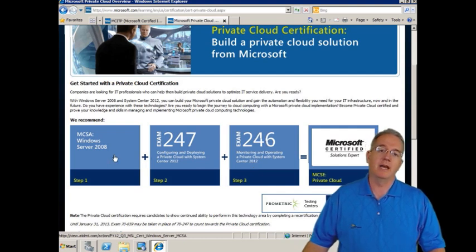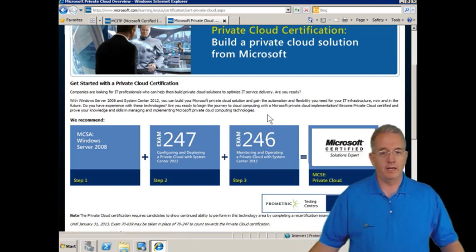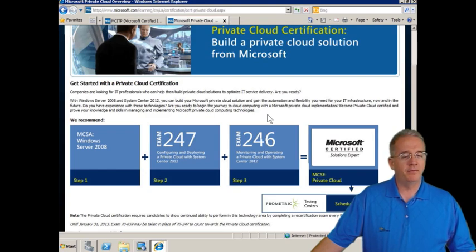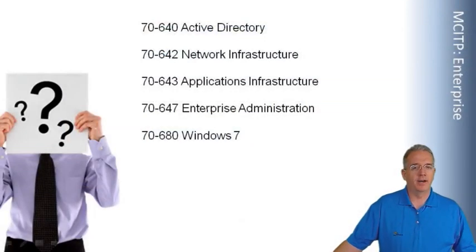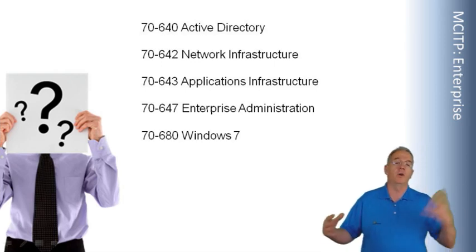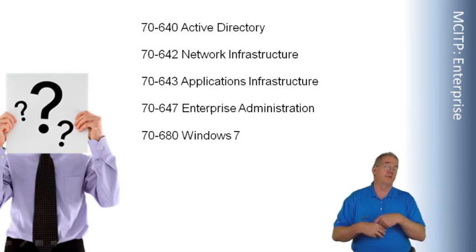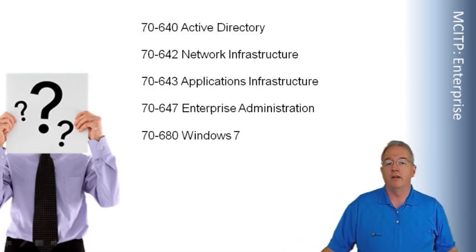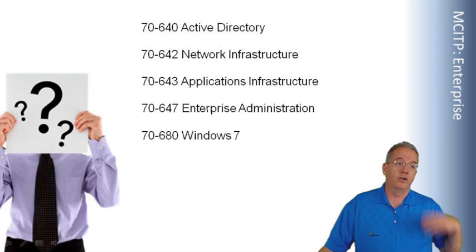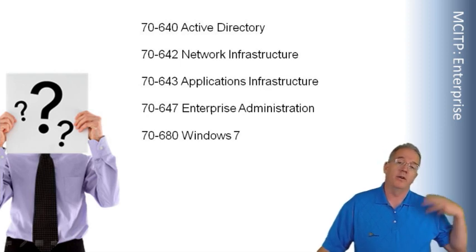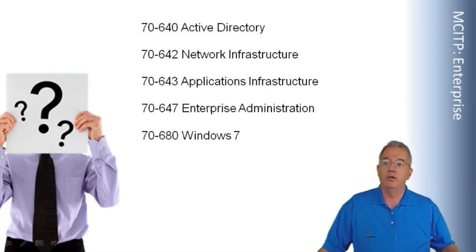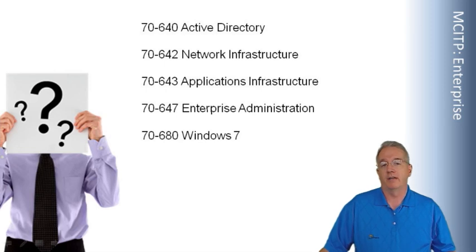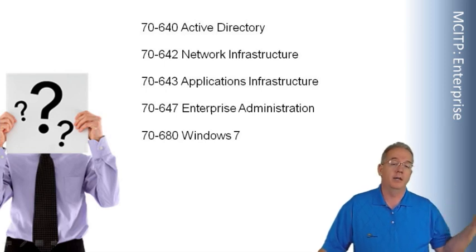So what is this MCSA? In order to be an MCSA, you have to pass three exams — Active Directory, Network Infrastructure, and Application Infrastructure. So if you're already passing those three exams and mastered that material, you are an MCSA. You don't have to take the Enterprise exam or the Windows 7 exam; you just take the two private cloud exams and you become an MCSE.